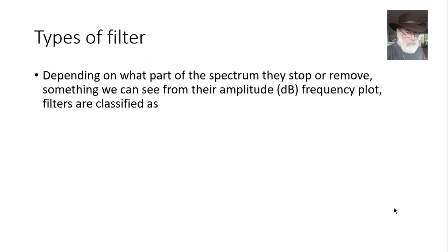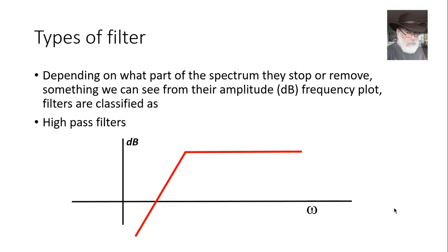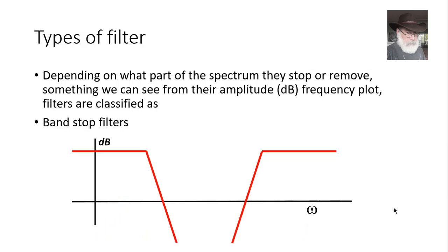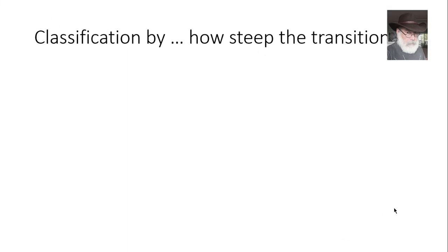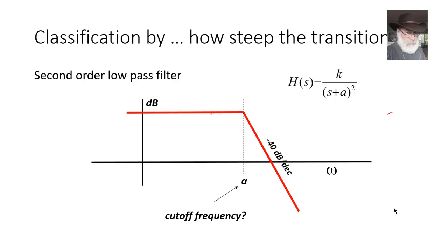We can specify the type of filter depending on what part of the spectrum it stops or removes: a low pass filter, a high pass filter, a band pass filter, or a band stop (band reject) filter. We can also classify by how steep the transition band is. For a transfer function with only one pole, the transition band has a slope of negative 20 dB per decade — a first order low pass filter. If we add another real pole, the transition band is steeper, giving a second order low pass filter.